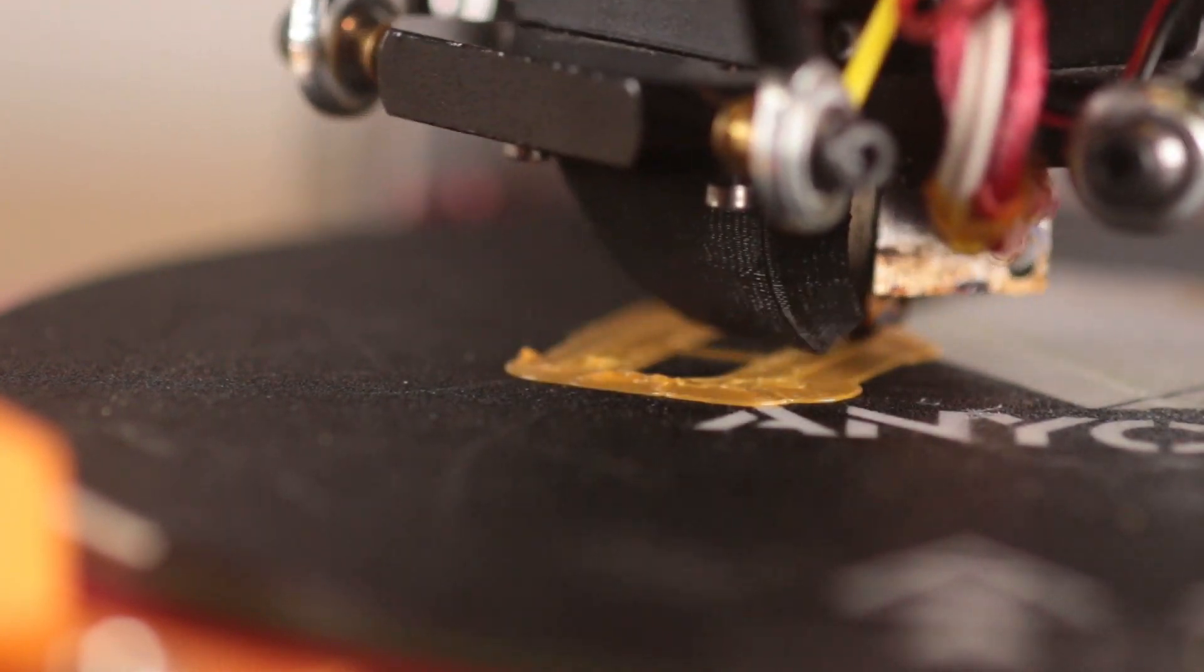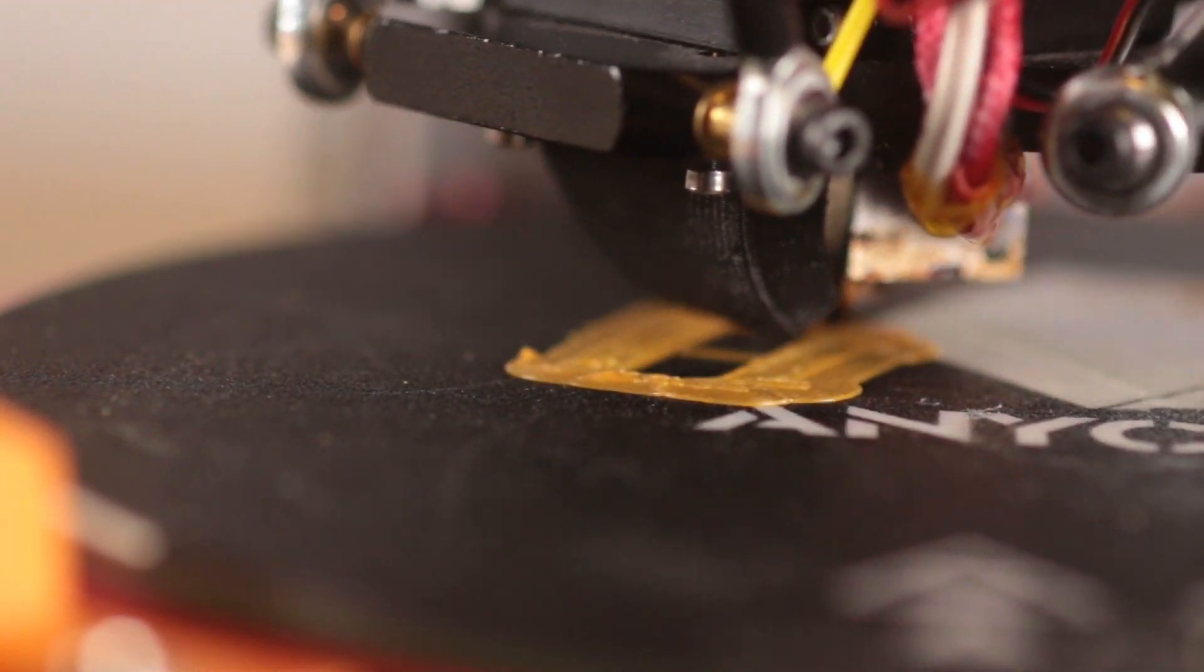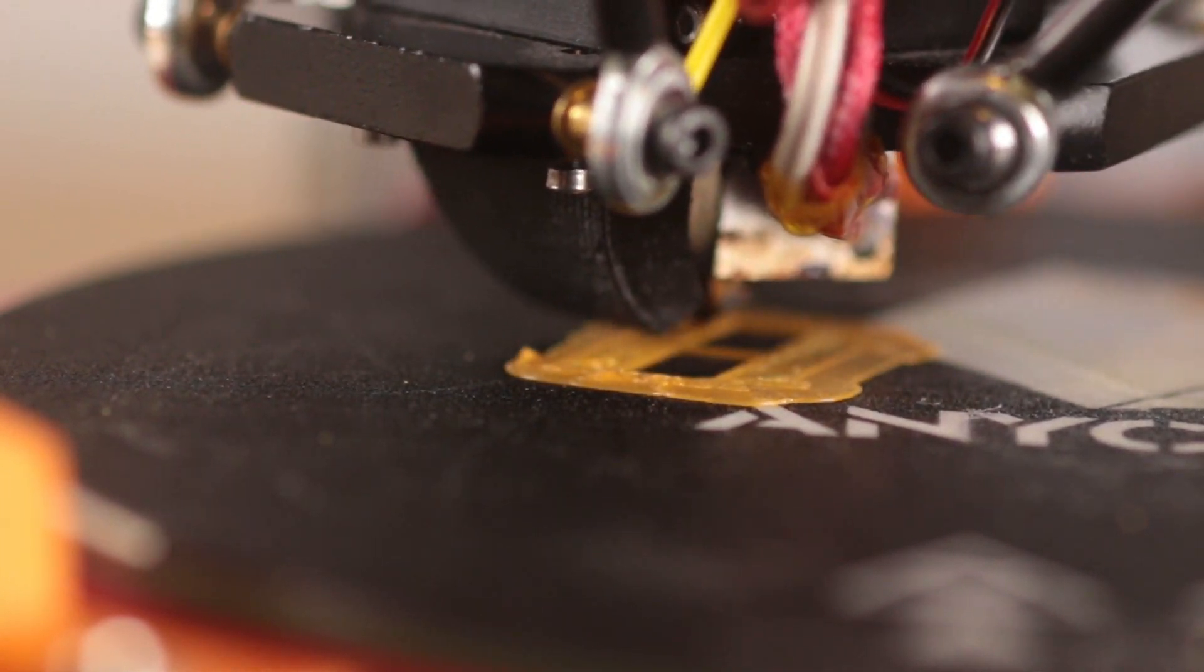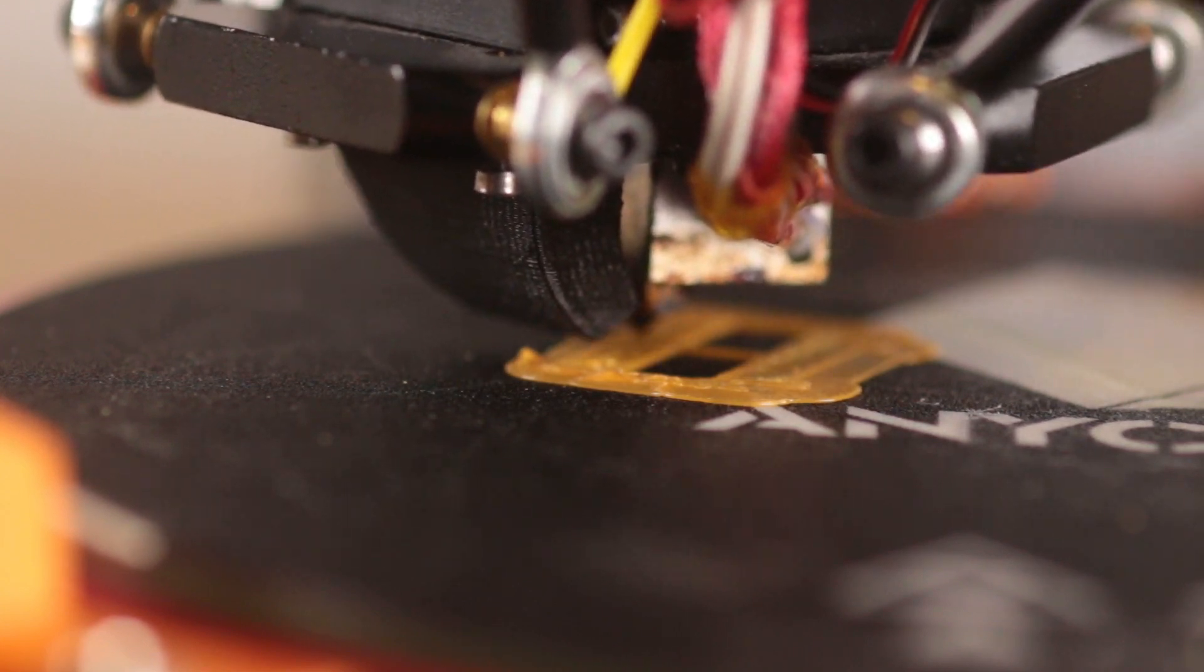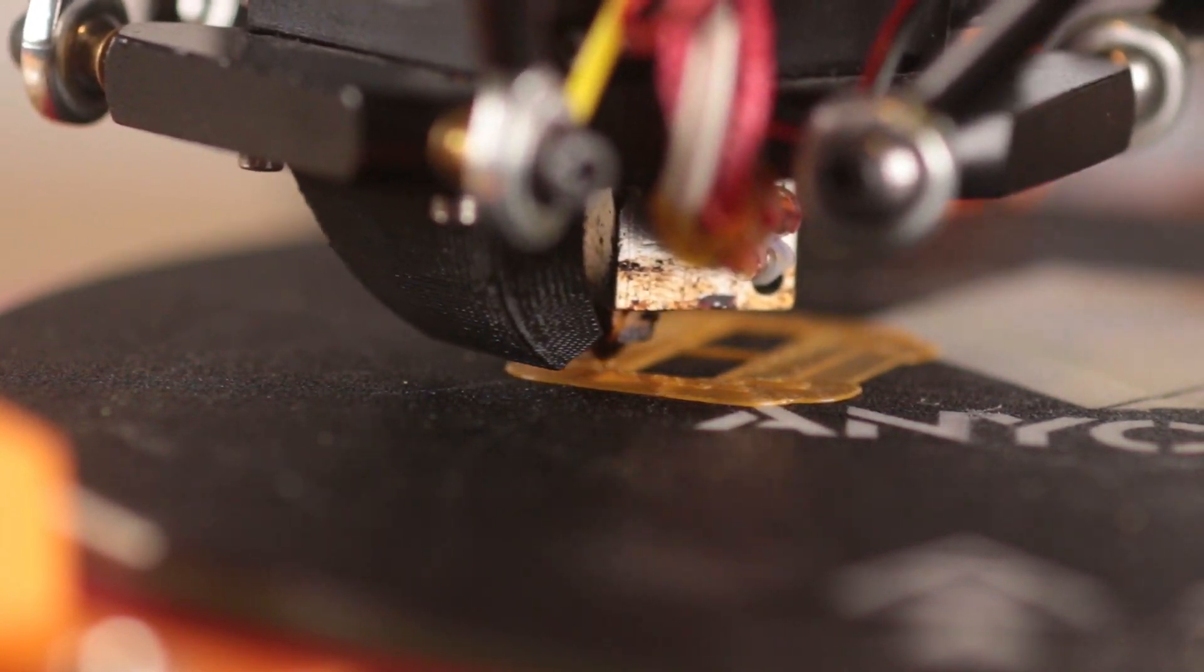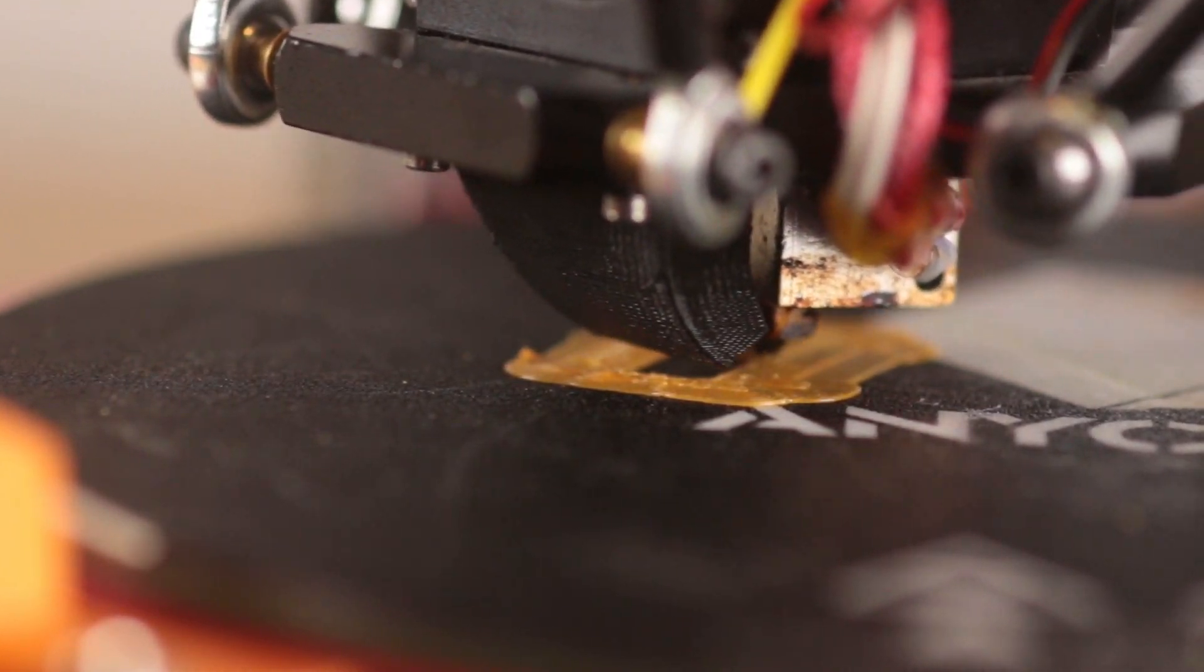What we're gonna do now is print a better fan shroud. This one is going to direct the air from both sides of the nozzle, so it's just gonna split the air supply and just sort of vent it around either side. We'll wait for this to print and then we're gonna print it again.